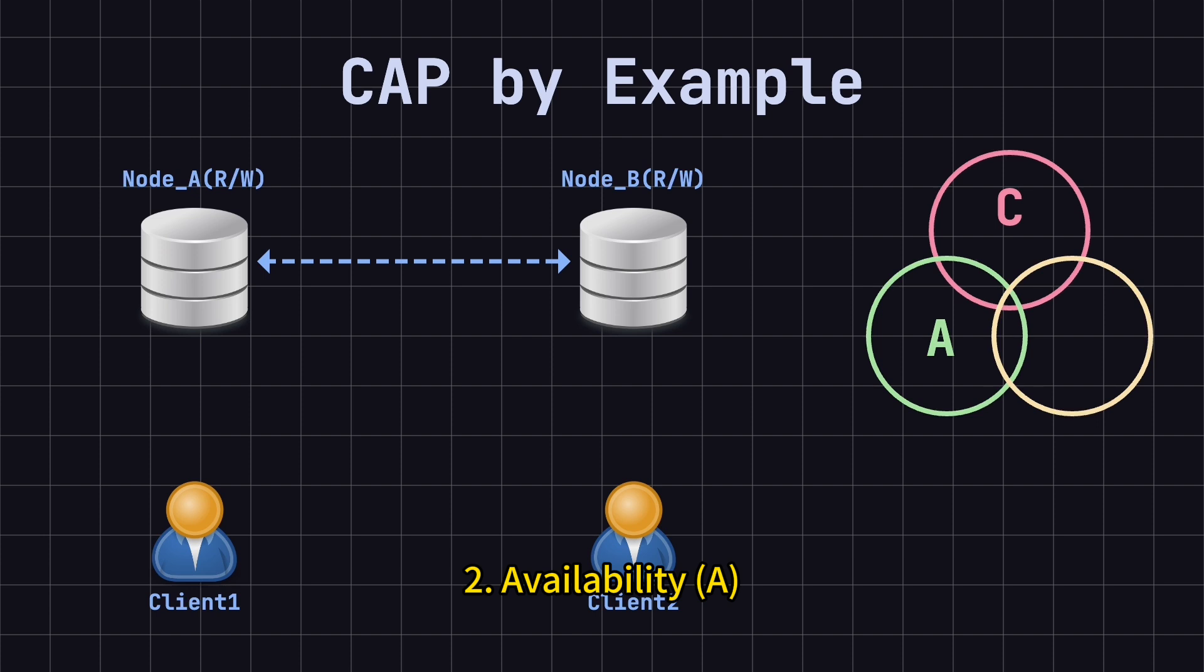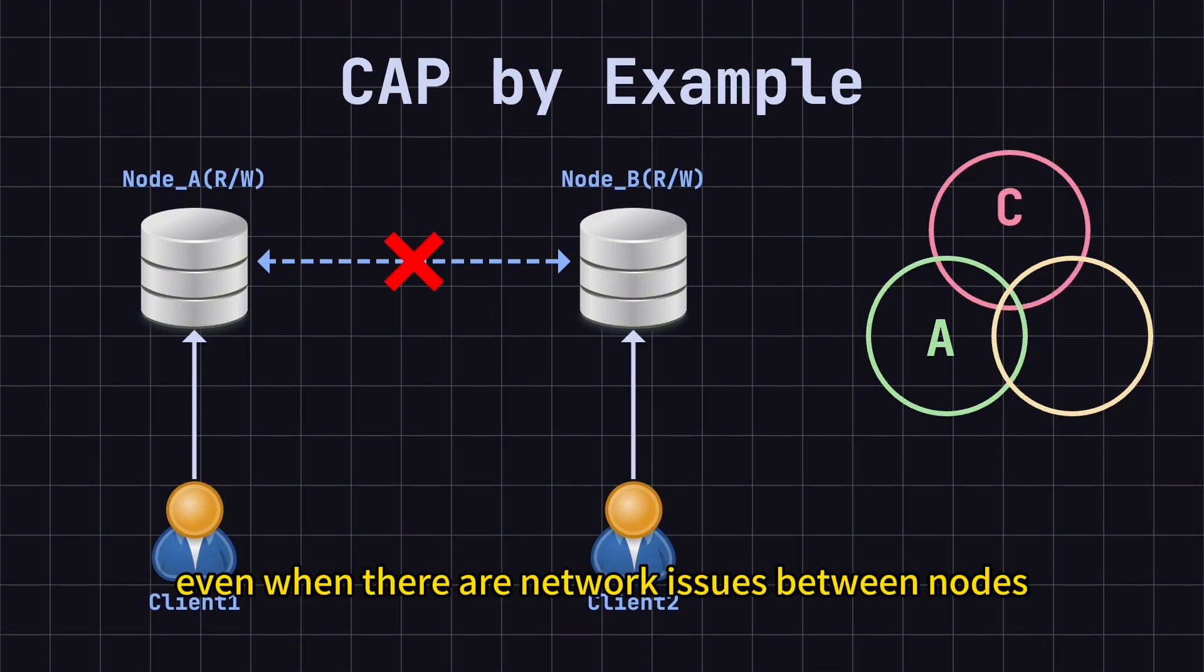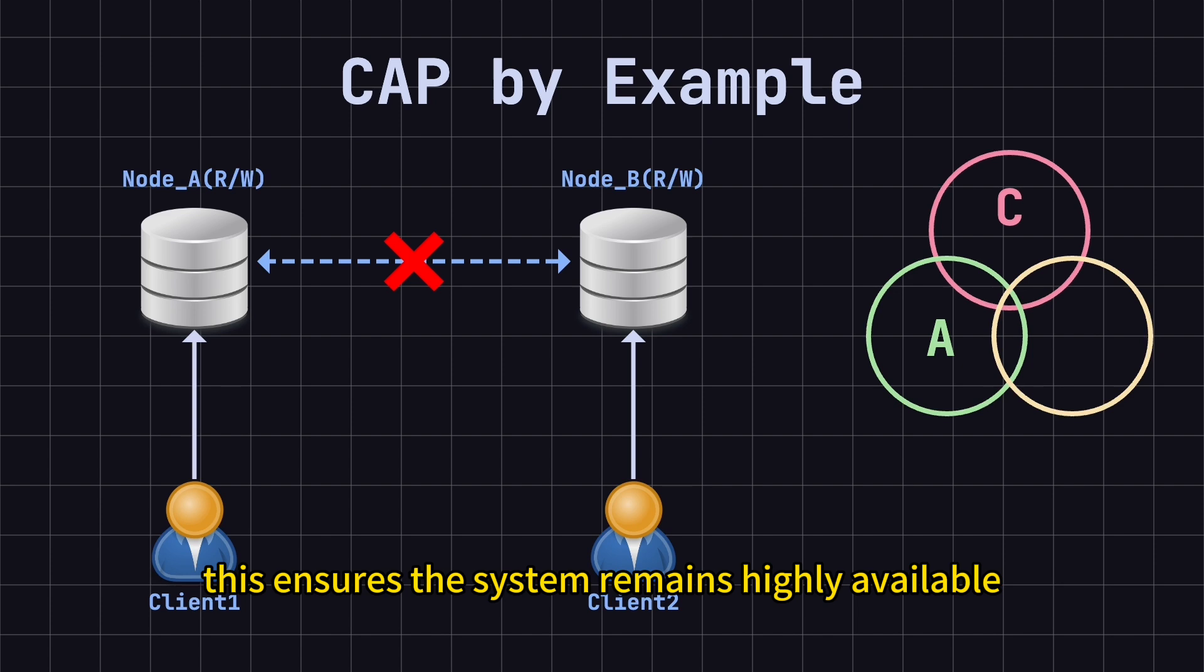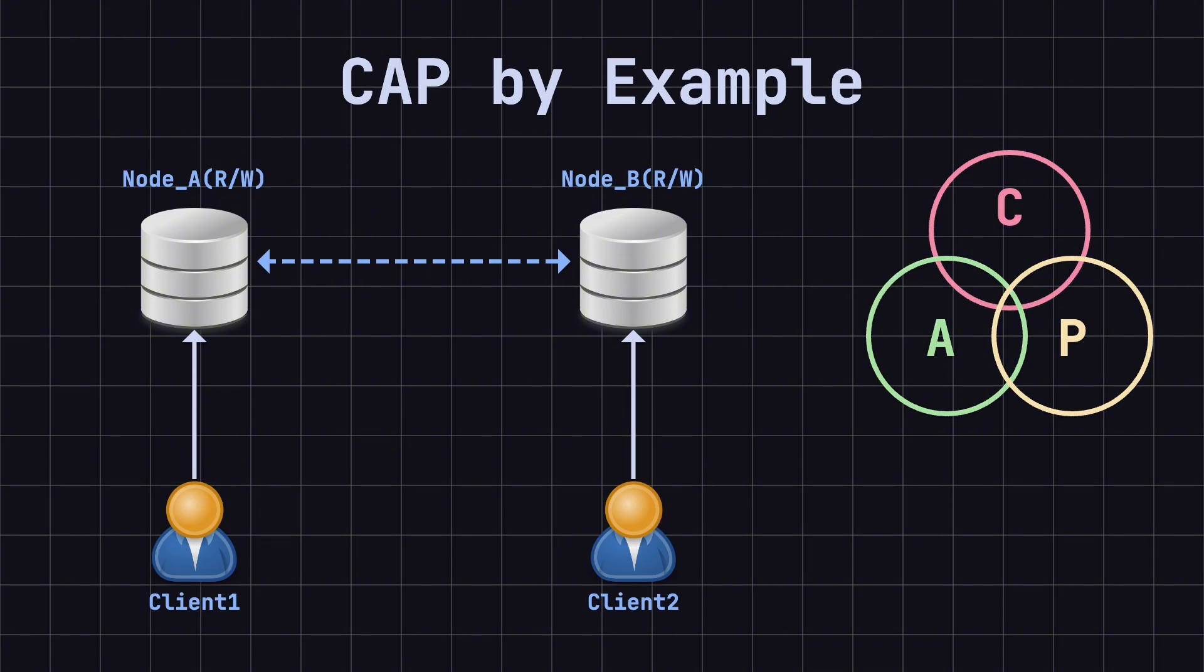Second, Availability. Availability means that the system can always respond to client read and write requests in a timely manner, even when there are network issues between nodes. This ensures the system remains highly available. Third, Partition Tolerance. Partition Tolerance means that the system can handle situations where the network between nodes A and B might temporarily fail, preventing them from communicating. Partition Tolerance requires the system to continue functioning even under these conditions.